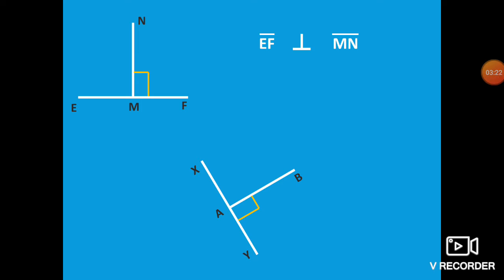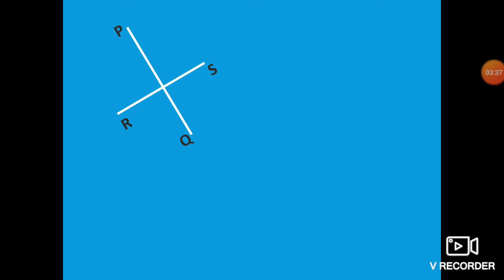Another perpendicular line: Line segment XY perpendicular to Line segment AB, or we can say Line segment AB perpendicular to Line segment XY. Next, another type of perpendicular line: Line segment PQ perpendicular to Line segment RS.